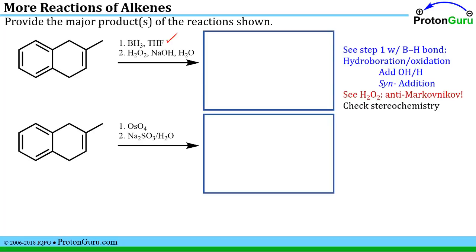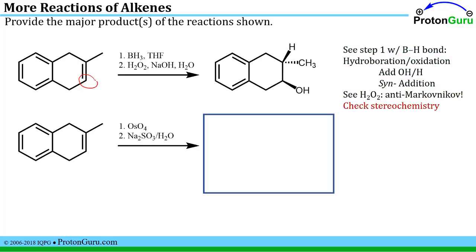Looking at the first reaction, in step one we see something with a B-H bond, whether that's listed as BH3, B2H6, or an H on a boron with two R groups. When we see a B-H bond, we think this is going to be a hydroboration oxidation. That reaction proceeds with addition of an OH and an H with syn addition. This reaction also exhibits anti-Markovnikov regioselectivity. One way you can tell you'll have an anti-Markovnikov reaction is that you see hydrogen peroxide in the conditions.